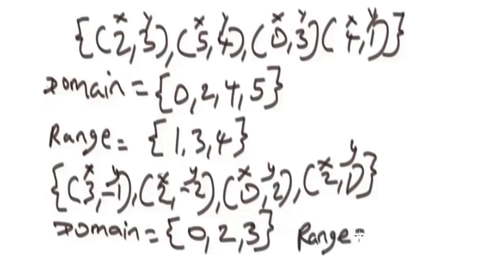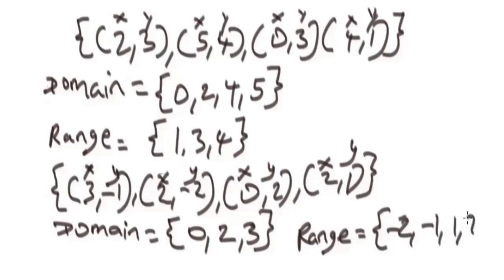The range will be the y-values. Starting from the least value: negative two, then negative one, then one, and two. So the range of these ordered pairs is {-2, -1, 1, 2}.